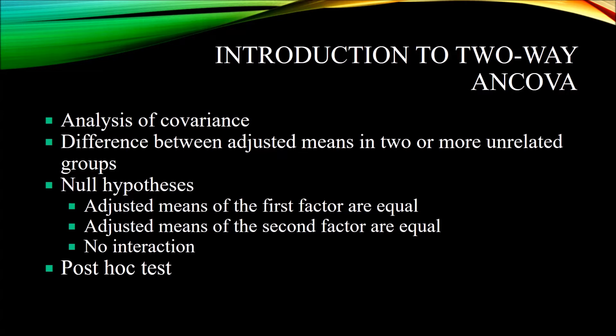To get to a two-way ANCOVA, we need to include a covariate. A fairly common approach is to administer a pretest — the same depression inventory — to every participant before the treatment. That pretest score functions as a covariate, so we're controlling for the pretest score by treating that variable as a covariate. The pretest explains variance in the post-test; it's not causing the post-test score, but it is related to it.